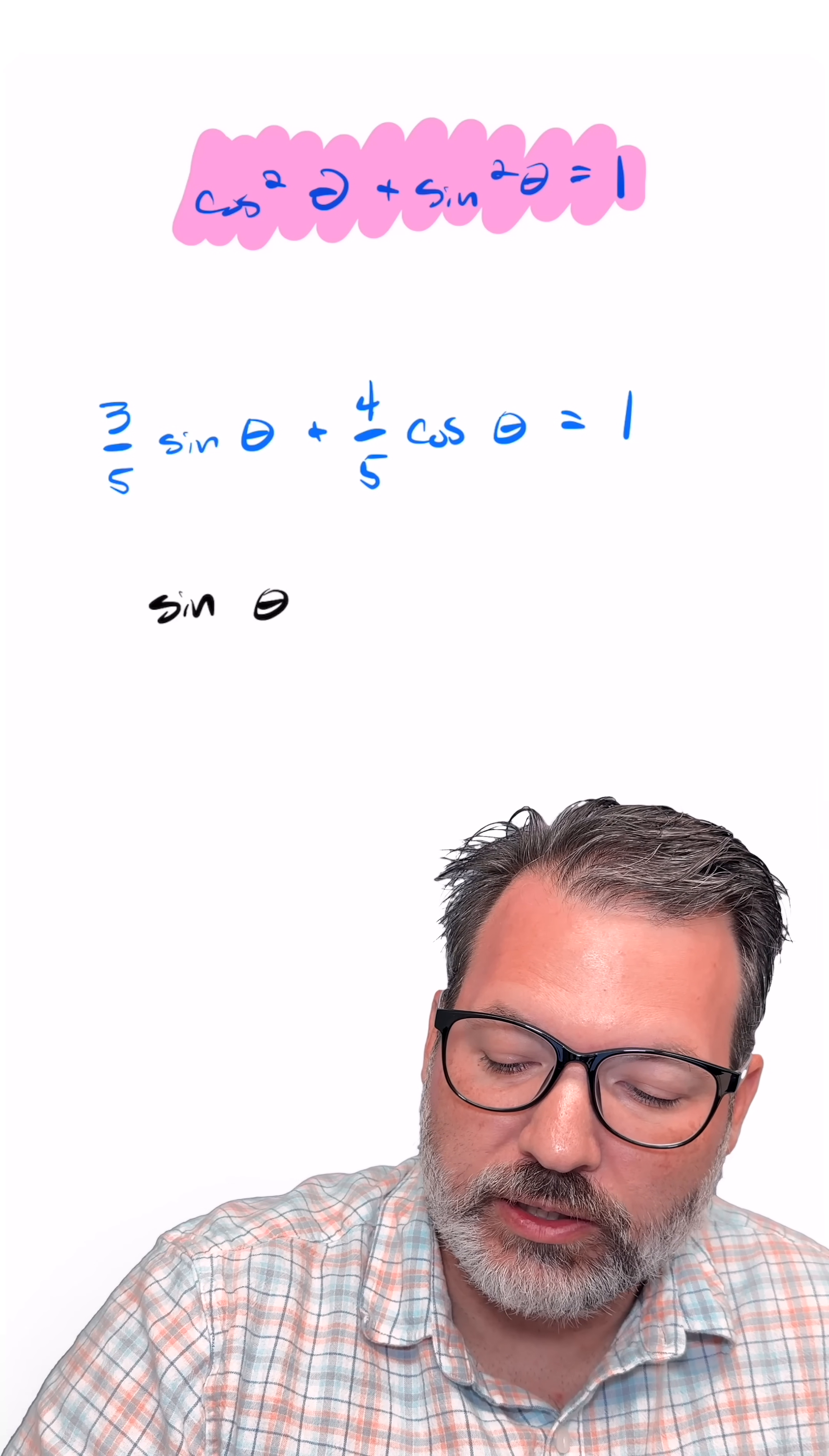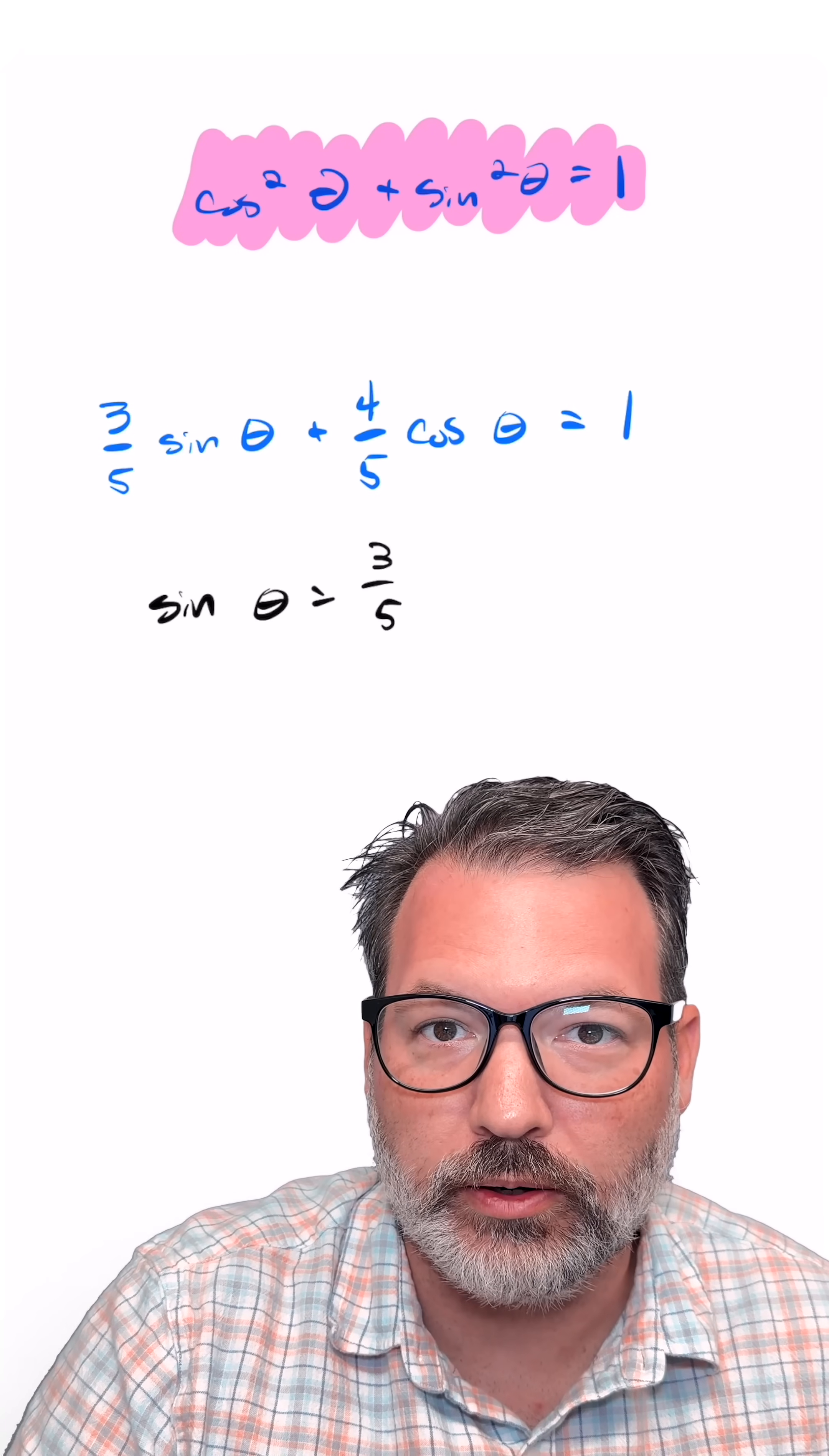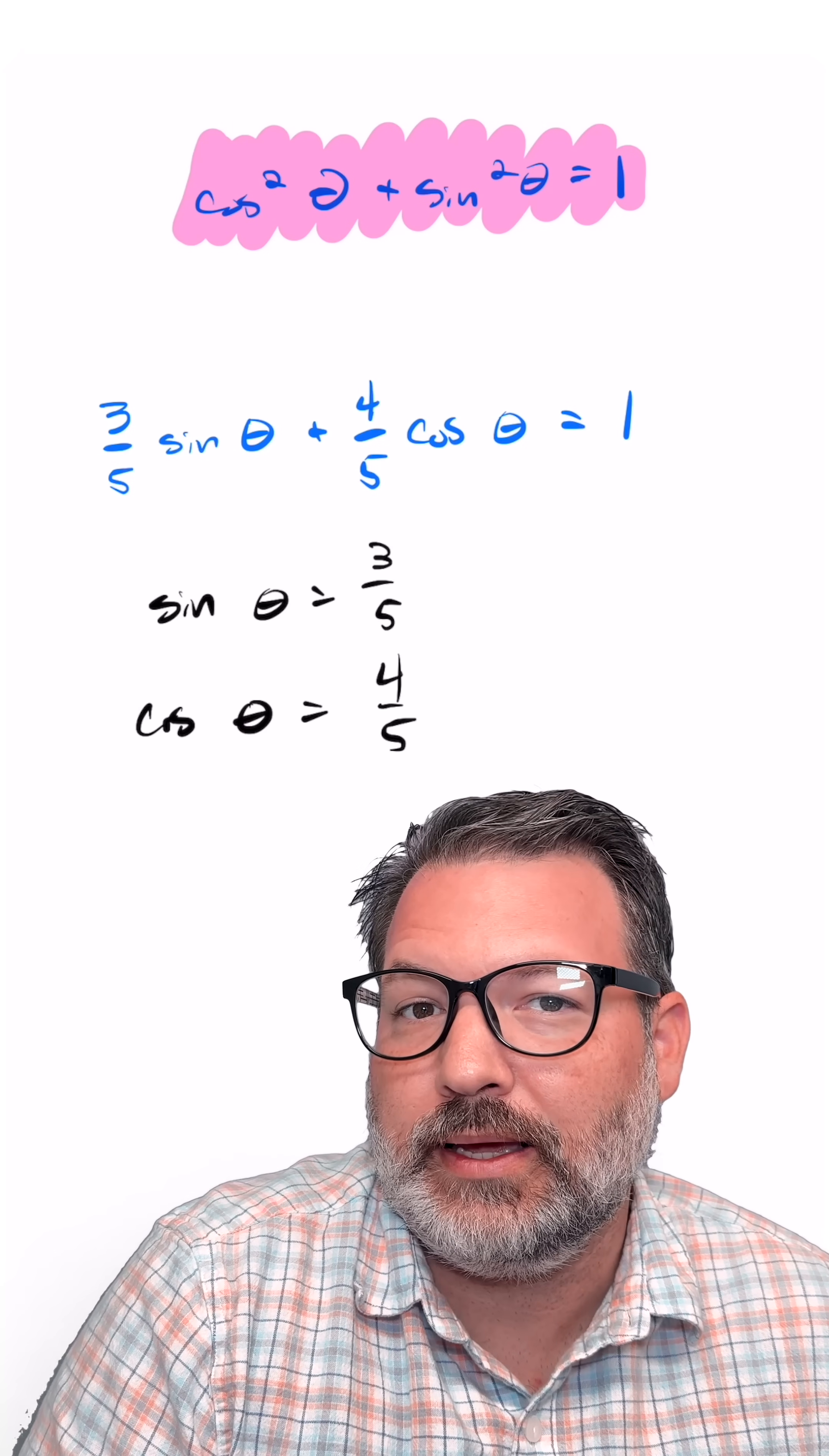for sine of theta to be equal to 3 fifths, because then 3 fifths times 3 fifths is going to be something squared. Similarly, cosine theta would need to be 4 fifths here to get another square involved. And honestly, that's it.